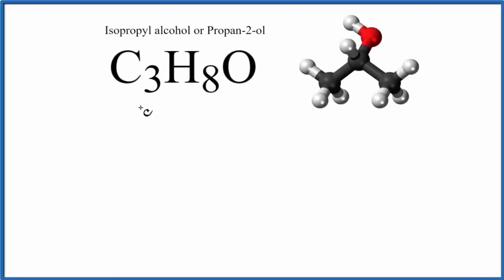In this video we'll write the Lewis structure for C3H8O. In this case we're talking about isopropyl alcohol or propan-2-ol. So let's count up our valence electrons first and then we'll work on the structure.